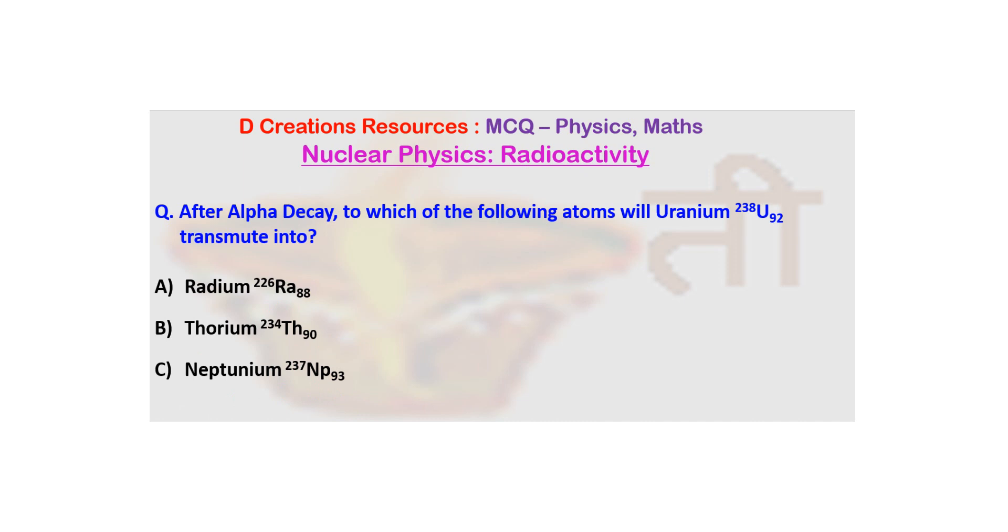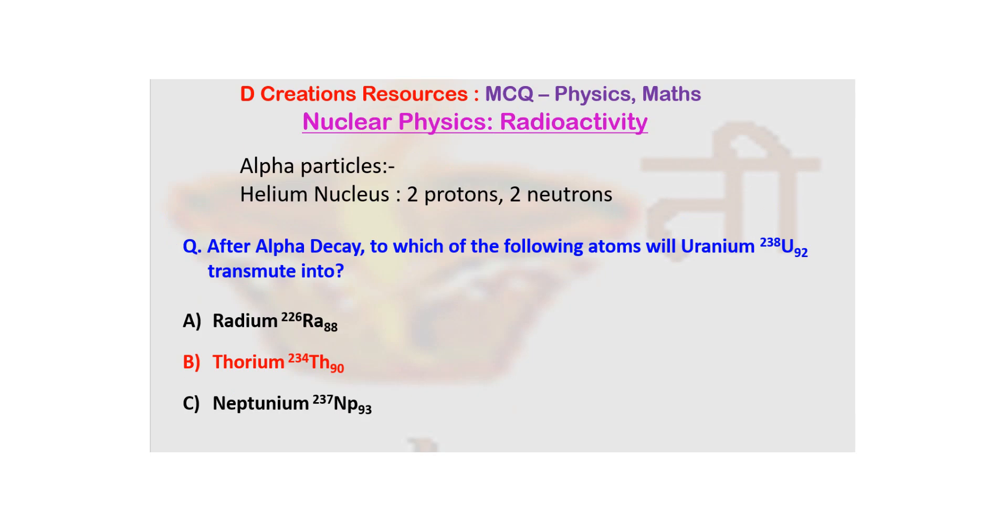So basically what we know is alpha particle is equivalent to a helium nucleus. So when an alpha particle is going to be emitted, it is like 2 protons and 2 neutrons are being emitted. Now if 2 protons and 2 neutrons, that means 2 plus 2 is 4. So the mass number has to decrease by 4 and 2 protons, so the atomic number has to decrease by 2. As you can see, if mass number decreases by 4 it will become 234, while if atomic number decreases by 2 it is going to become 90. So the correct option here is thorium 234-90 and of course TH is the symbol of thorium.